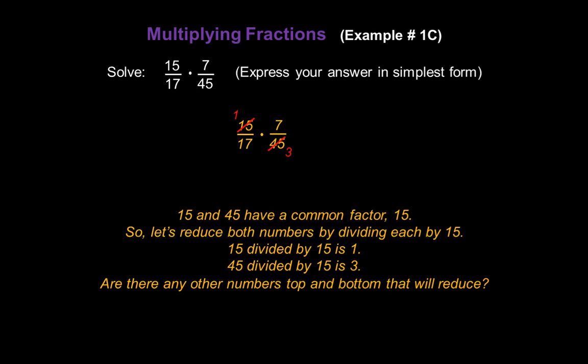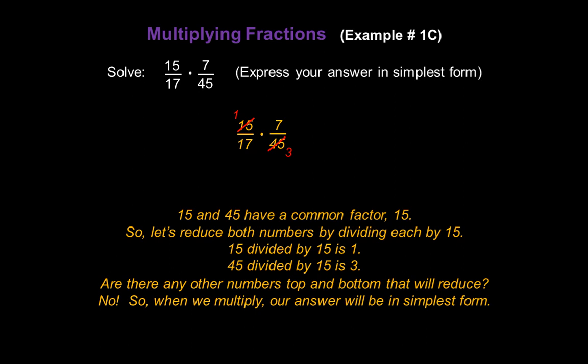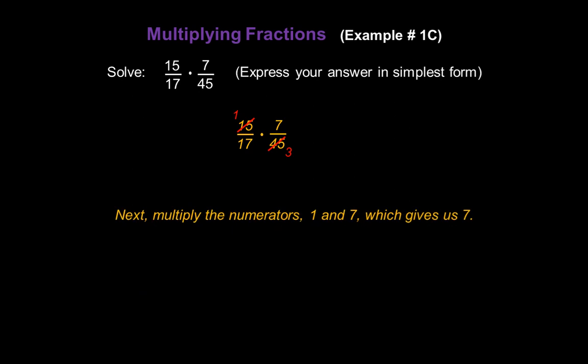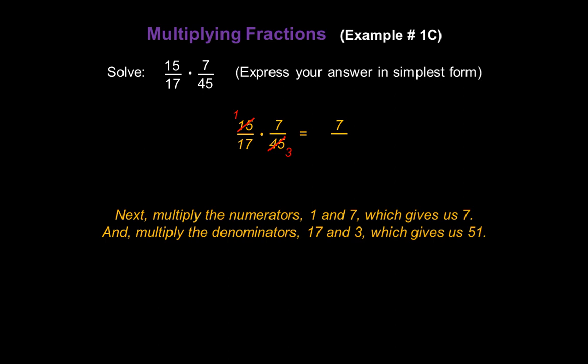There are no other numbers to reduce, so when we multiply, the numbers are smaller and our answer will already be in simplest form. Multiply the numerators 1 and 7 to get 7 in the numerator. Then multiply the denominators 17 and 3, which gives us 51 in the denominator. Since it's already in simplest form, our answer is 7/51.